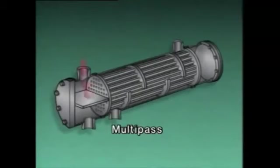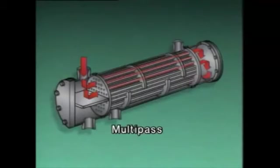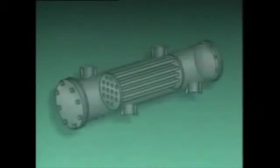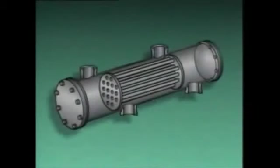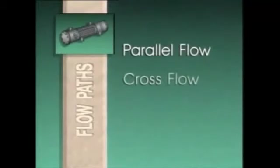The tube side fluid enters here and is directed through half of the tubes by the inlet head. After passing through the first half of the tubes, the fluid is directed into the rest of the tubes by the return head. The fluid then passes through the rest of the tubes and is directed out of the heat exchanger. Besides the number of passes, the flow paths inside a heat exchanger can also be used to categorize types of heat exchangers. There are three general categories: parallel flow, cross flow, and counter flow.